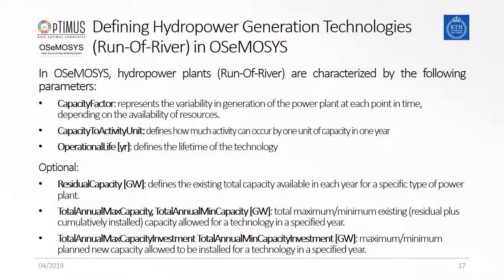Apart from the parameters that need to be defined, there are a couple of parameters that can be optionally defined if needed. The parameter residual capacity can be used to consider power plant capacities that are already installed in the represented energy system. The two parameters total annual max capacity and total annual min capacity can be used to set an upper or lower limit on the installed capacity of the technology. With the parameters annual max capacity investment and total annual min capacity investment, the installation of new capacity can be limited or forced on an annual basis.